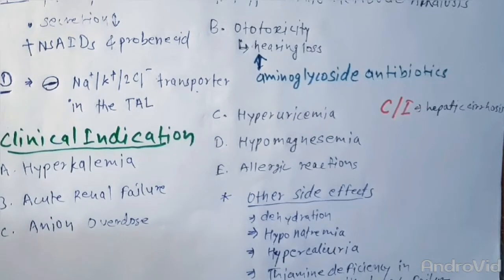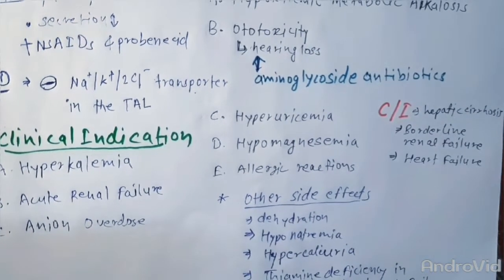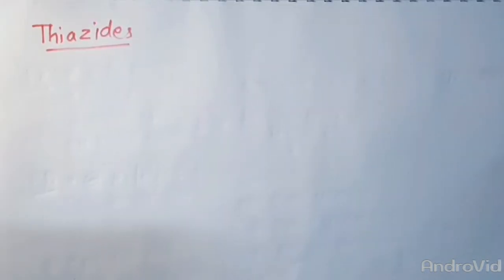They are contraindicated in hepatic cirrhosis, borderline renal failure, or heart failure. So now we will discuss about the thiazides.